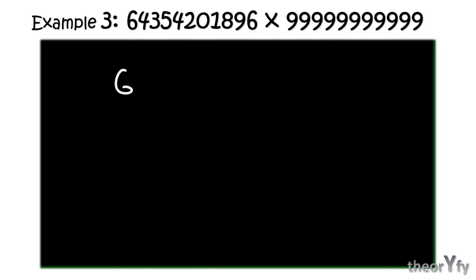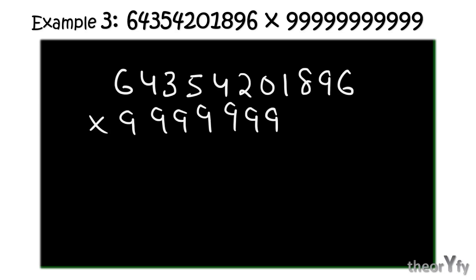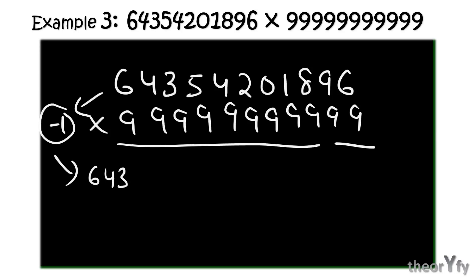This is the same number which we had in our first slide where I asked you one question: can you solve it and can you solve it in 7 seconds? But you can do it. You need a better understanding and little practice as well. So let's try to solve it here. First subtract 1 from the number: 64354201895. That is LHS.